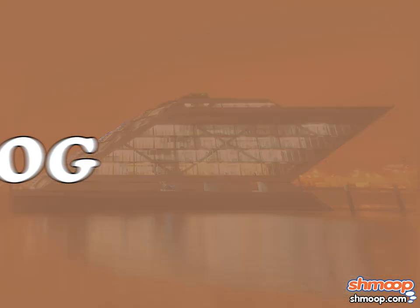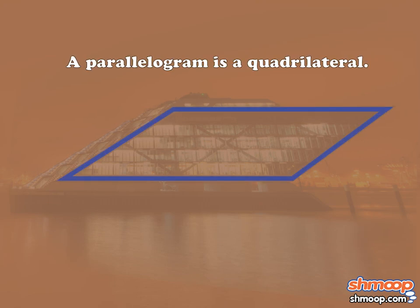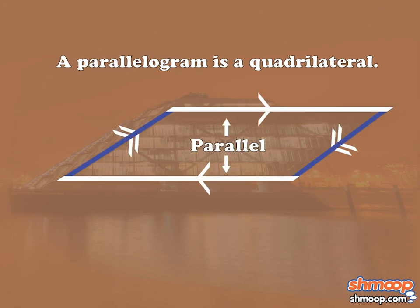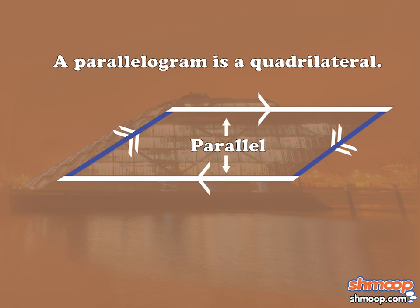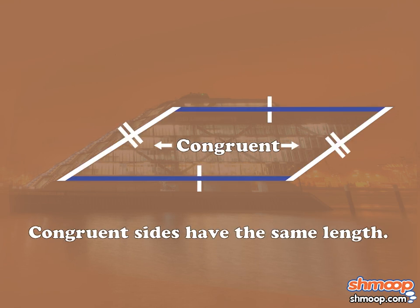Let's look at the characteristics of a parallelogram. A parallelogram is a quadrilateral composed of two sets of parallel line segments. The line segments opposite each other are congruent, or have the same length.